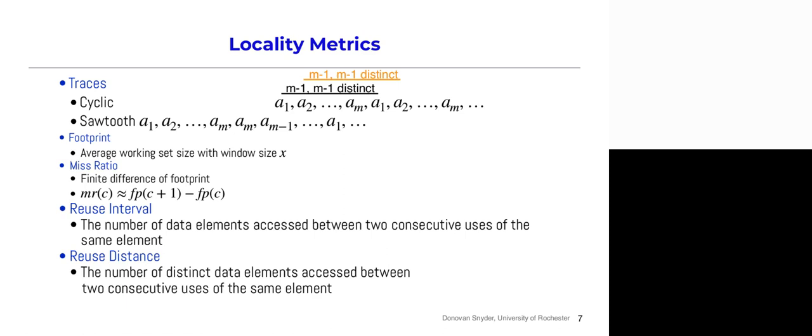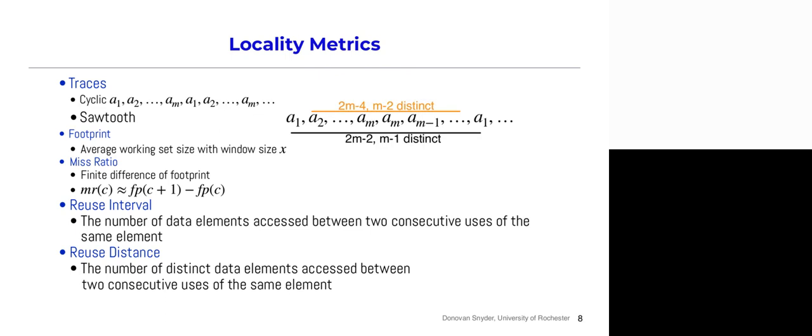For the reuse interval it's slightly more complicated. The key difference: reuse distance looks at distinct data elements, while reuse interval looks at the total data between two consecutive accesses. In the cyclic trace, between consecutive accesses of a1 there are m-1 total elements. For the sawtooth trace, between consecutive accesses of a1 there are all m-1 other distinct data places, but two times that number of total data accesses. For a2 there are m-2 distinct elements and again twice that for total accesses. We usually use reuse distance because it helps with our cache analysis.